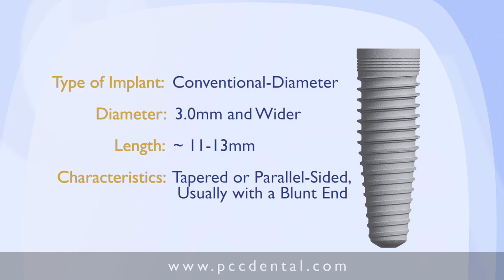That blunt end means I can't spread the bone very much — I have to make a hole almost the size of the implant, place it in, and again wait for the osteoblasts to integrate with that tapered or straight-sided implant. An average-sized conventional implant of about 4 millimeters requires about 6 millimeters of bone facial to lingual to be adequately placed.